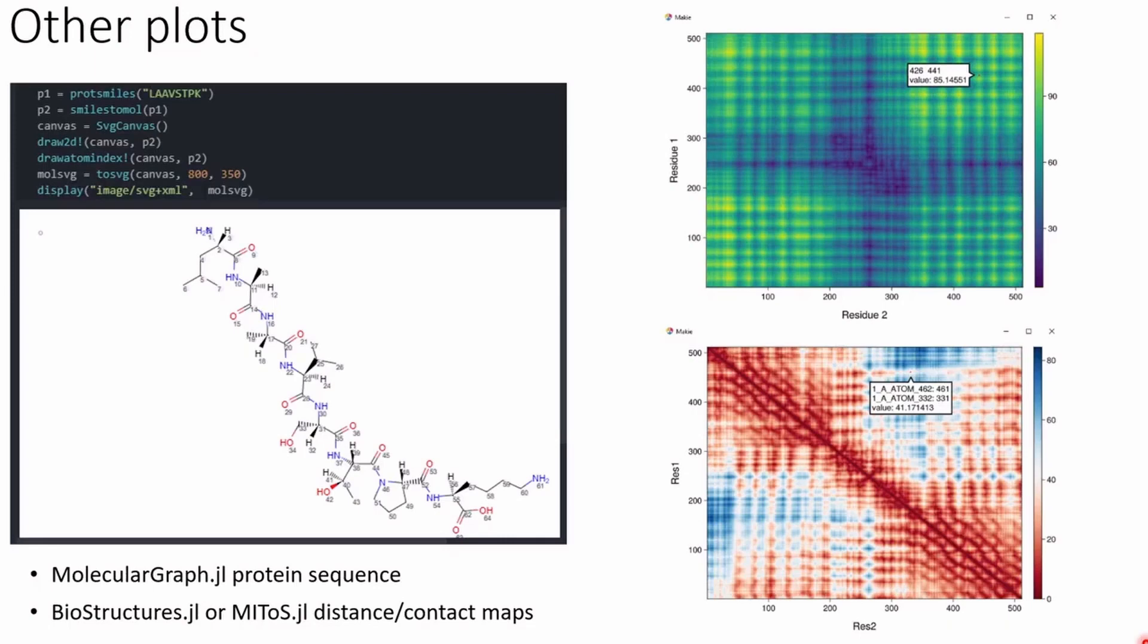Besides protein structures and multiple sequence alignments, there are some other plots that are implemented. On the left here you can see the plot of a short protein sequence using MolecularGraph where the sequence is converted into a SMILES chemical representation and then that's plotted using ChiroMakie and it shows accurate stereochemistry and atomic numbering.